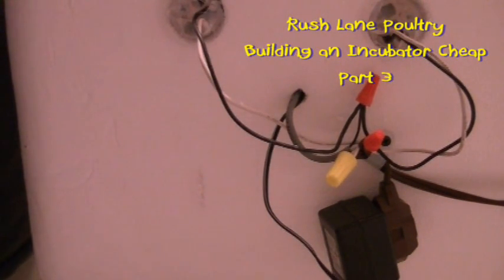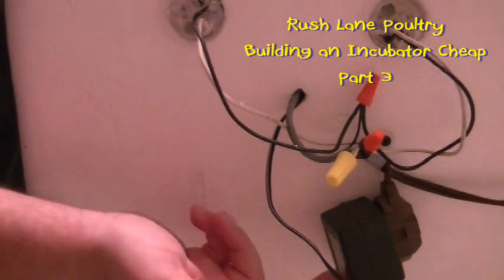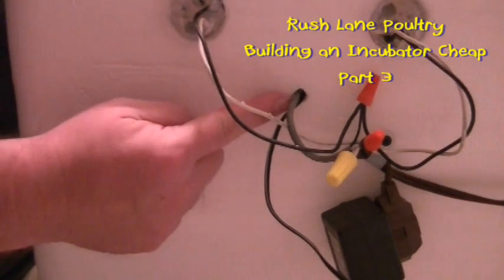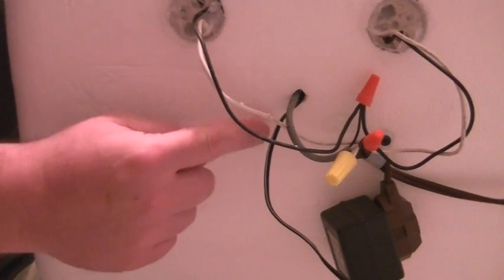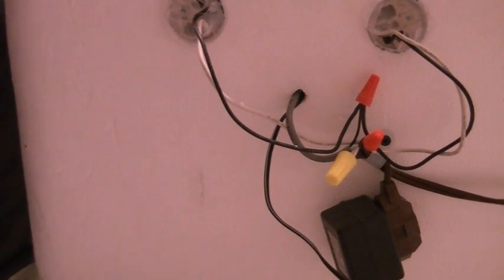We're wired up so we can plug it up and do a power test, make sure everything comes on. This is the wire that runs from your power inverter. Run it through the same hole right here. We're going to run this through the box. This is what's going to hook into my fan.